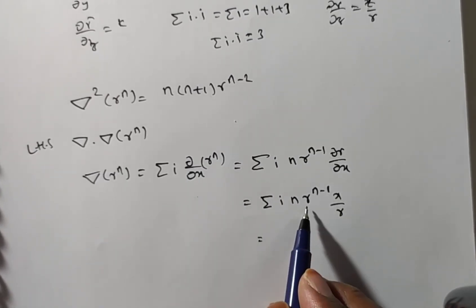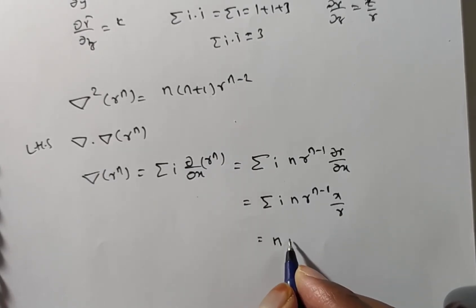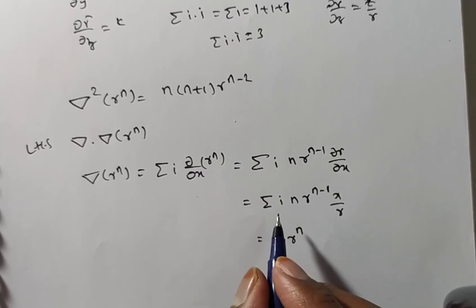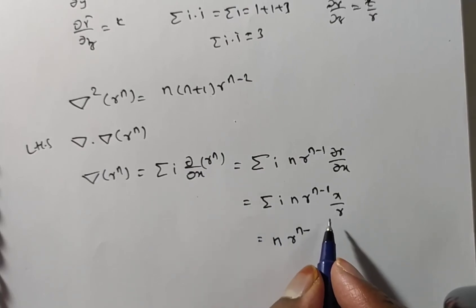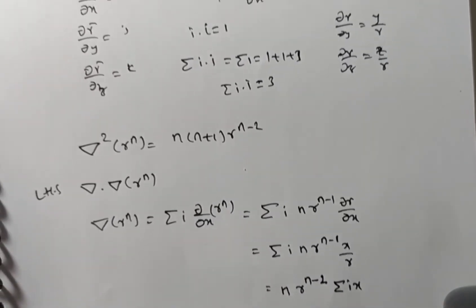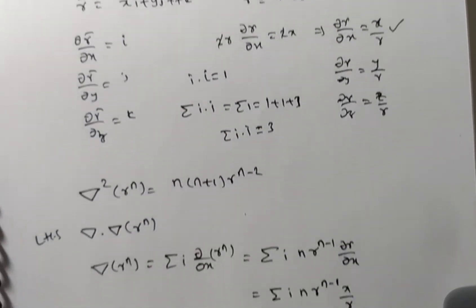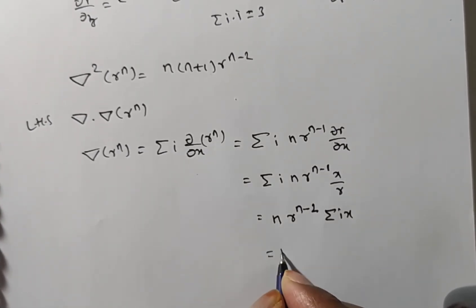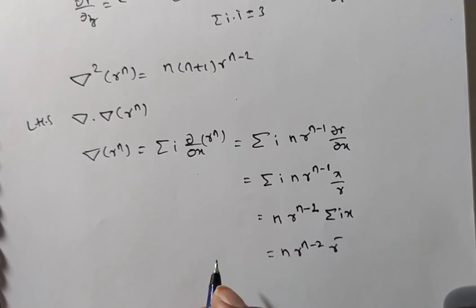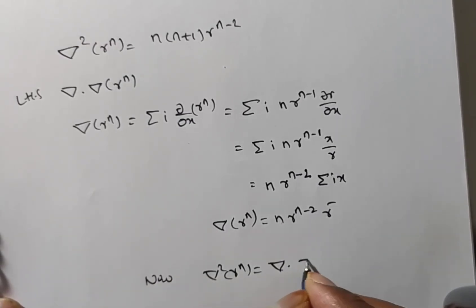Simplifying: n·rⁿ⁻² · summation(i·x). Now summation(i·x) = xi + yj + zk = r̄. Therefore del(rⁿ) = n·rⁿ⁻²·r̄. Now we compute del²(rⁿ) = del·del(rⁿ) = del·(n·rⁿ⁻²·r̄).